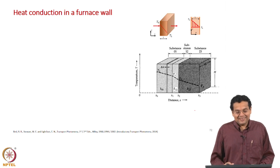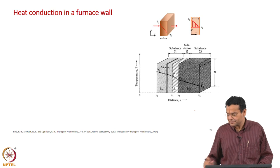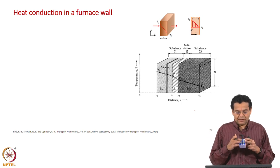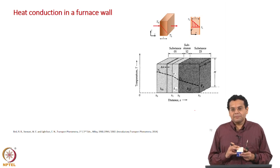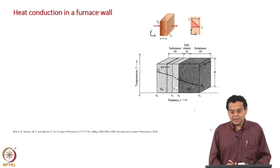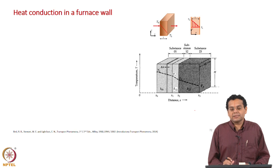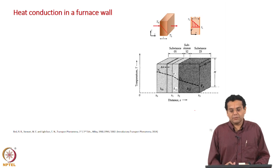Now let us extend the discussion we had for a single slab to a series of slabs. The application would be for a furnace wall. A furnace is equipment where we have very high temperature inside and we use it for carrying out high temperature reactions. Because the temperature is high inside and outside is ambient, there can be very high heat loss through the walls of the furnace.